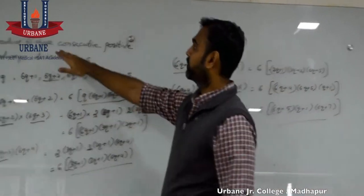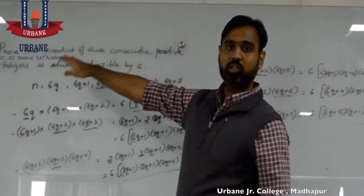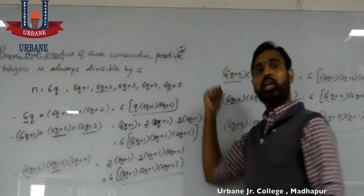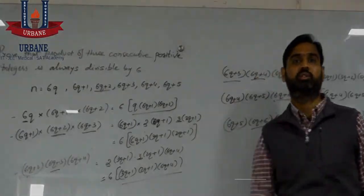Hence the product of three consecutive integers is always divisible by 6.